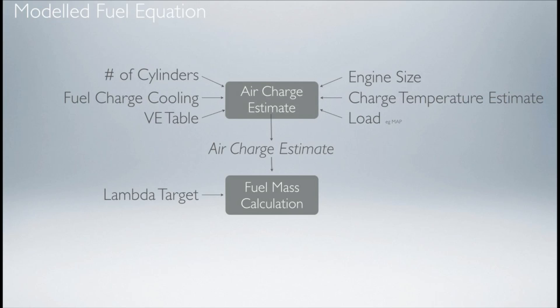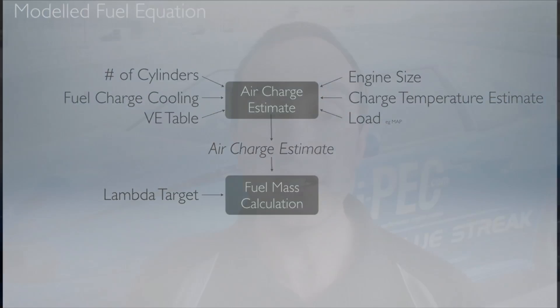The first input is the lambda target table. On the model fuel equation, this has to be in lambda — AFR is not an option. Stoichiometric is a value of 1 in lambda. As engine speed and load increase, we want to richen up the fuel mixture in our lambda target table, which means the number is going to decrease as engine RPM and load increase.